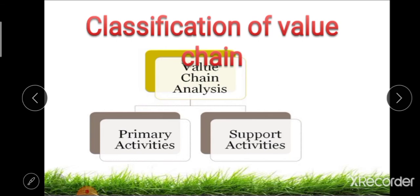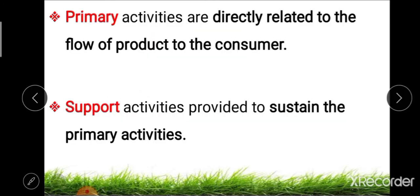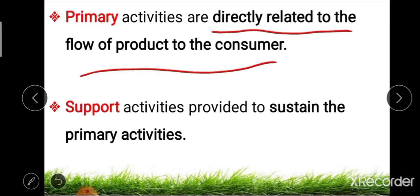Next is the classification of the value chain. Porter divides value chain activities into two major categories: first, primary activities, and second, supporting activities. Primary activities are directly related with the flow of the product to the consumer, while supporting activities sustain and facilitate the primary activities in the value addition process.